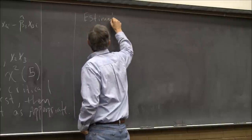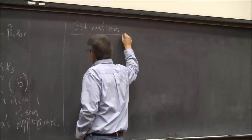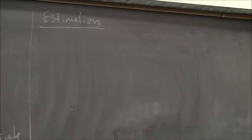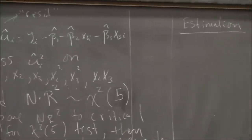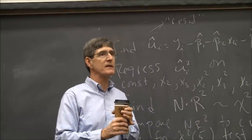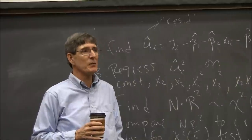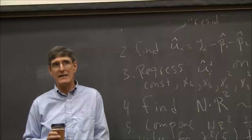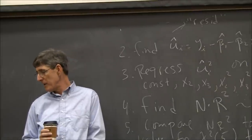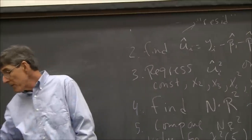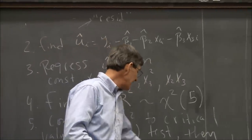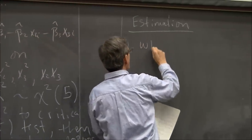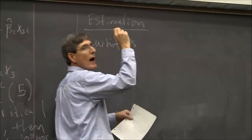Estimation is next. We've done the test. Let's say we found heteroscedasticity — we know OLS is inefficient. What do we do? We use the efficient procedure, which is called feasible generalized least squares. We're going to generalize the least squares procedure to handle heteroscedasticity. The first and simplest correction is White's correction.